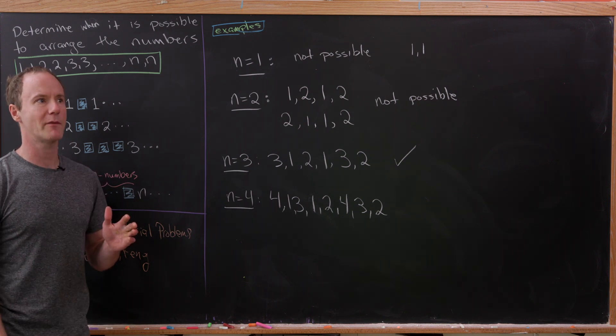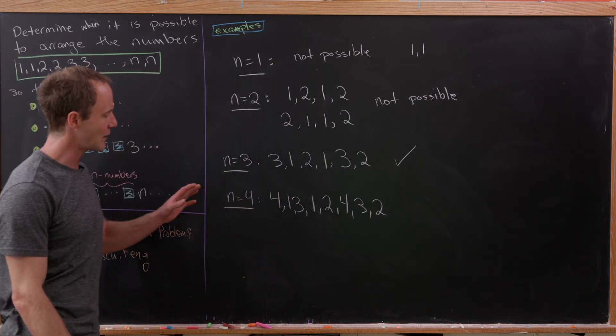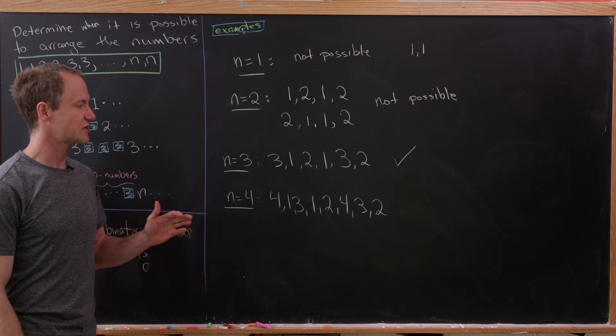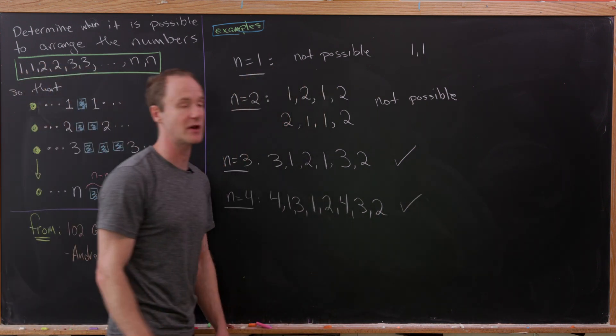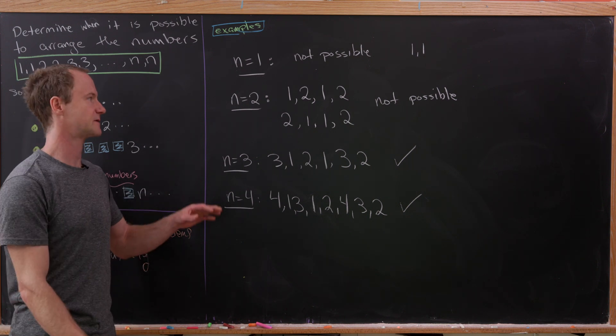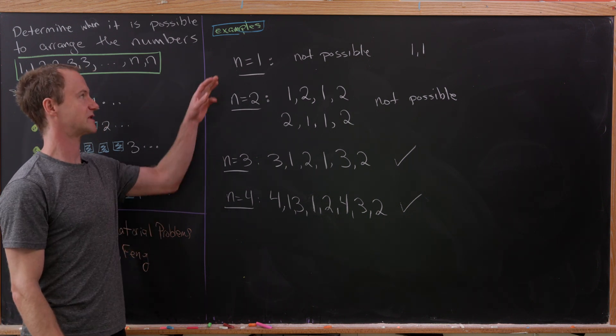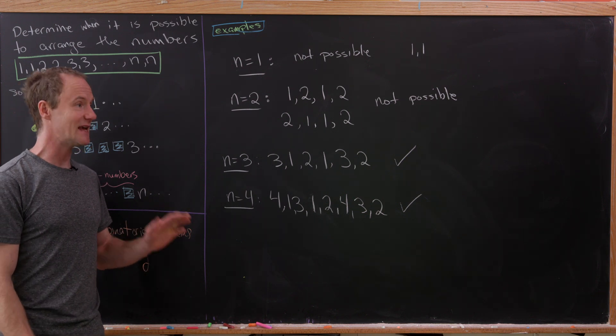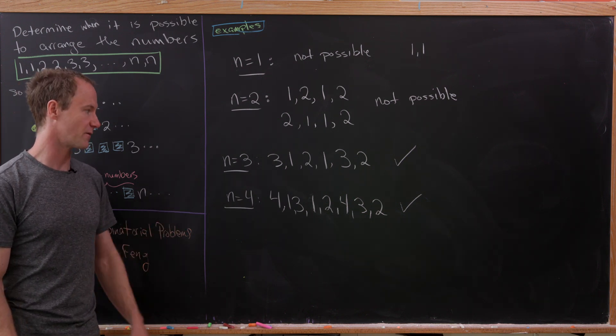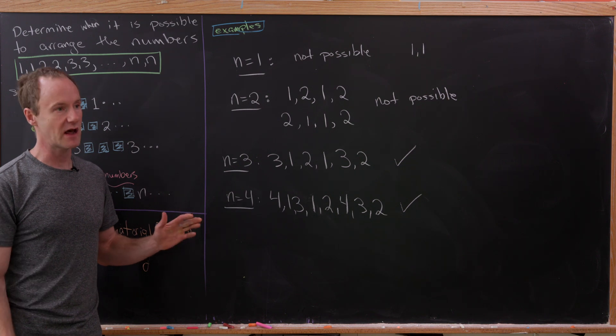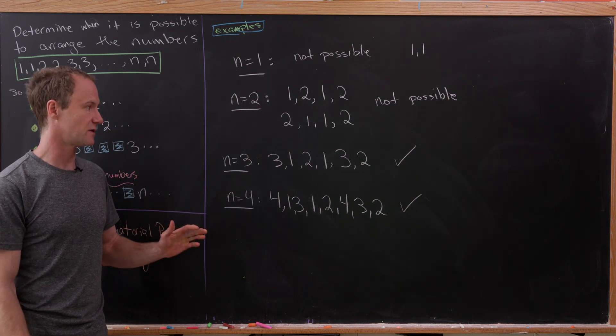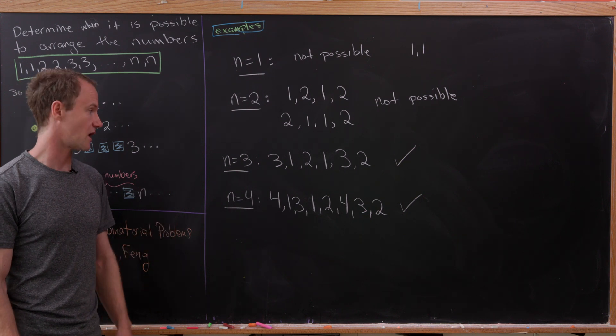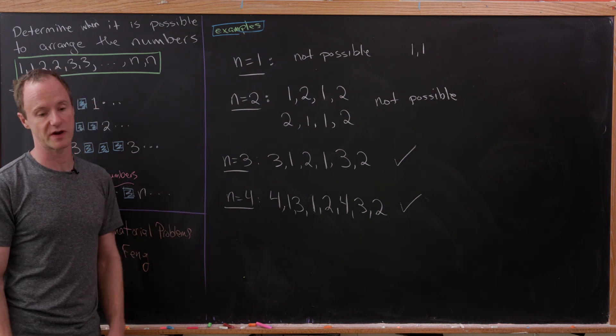In order to come up with a guess as to the answer to this question, you might want to do some more examples. But it turns out that these examples exhibit all of the possibilities. It's not possible if N is of the form 4k plus 1 or 4k plus 2. It is possible if N is of the form 4k plus 3 or 4k. In other words, not possible if N is congruent to 1 or 2 mod 4, possible if N is congruent to 0 or 3 mod 4.